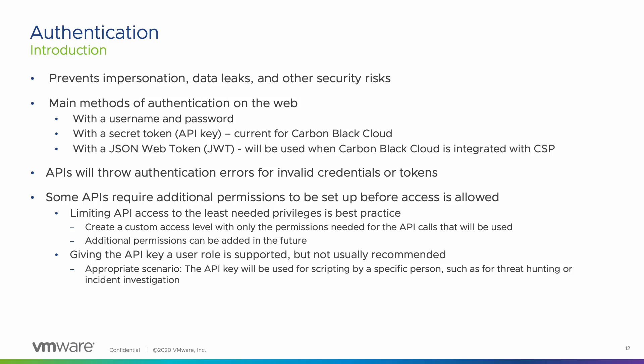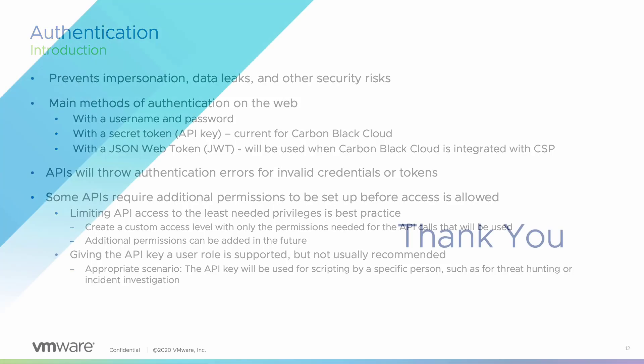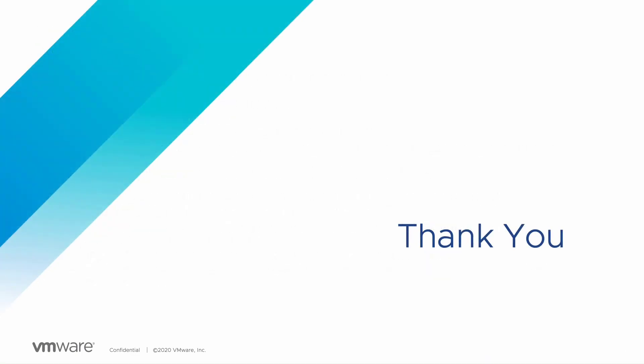The last few slides offer instructions on how to create a custom access level in Carbon Black Cloud. These same instructions can be found on our API documentation in the developer network. Instead of reading the instructions, I thought it would be more helpful for us to create a custom access level together. Now that we have a better understanding of REST APIs and their capabilities, and we have a basic knowledge of HTTP requests, responses, and authentication, it's time for us to call an API. Our next lesson in the series will be calling an API through a curl request. Thank you for your time today, and I hope this information has been beneficial. I look forward to seeing you in the next video.